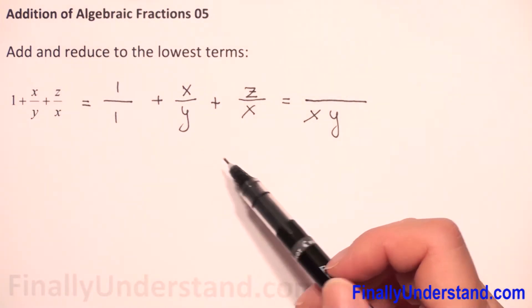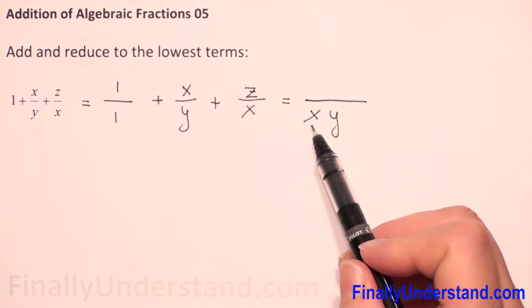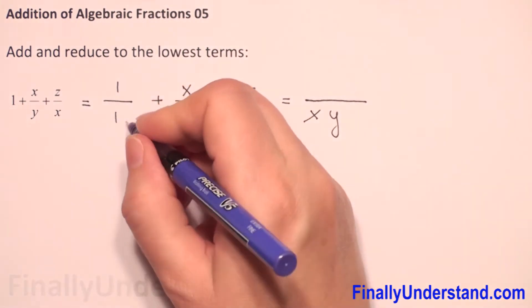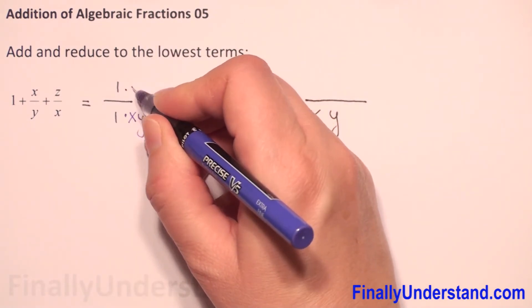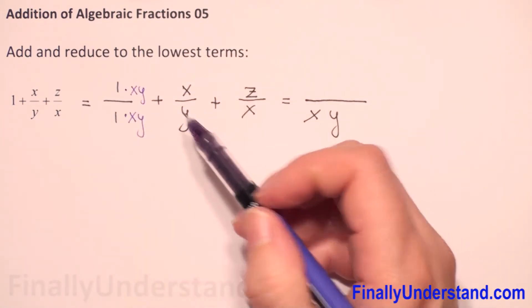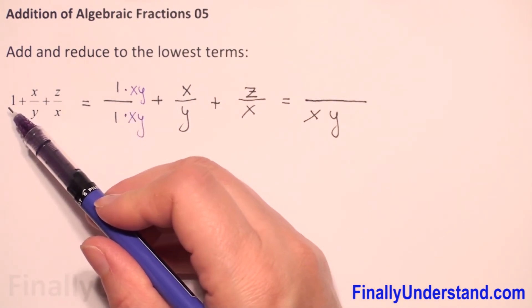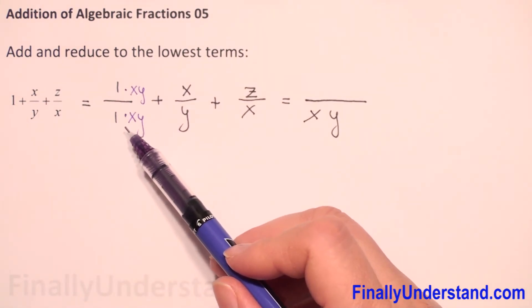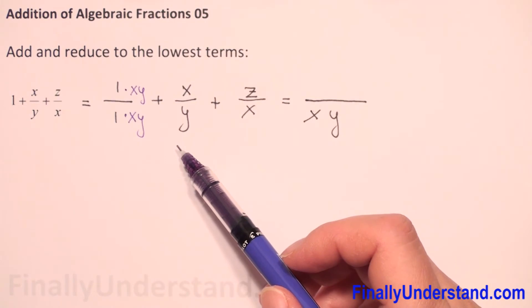When I change this fraction to the denominator xy, I have to multiply this fraction by xy. When I multiply the denominator by xy, I have to do the same with the numerator because I cannot change the expression. Since xy over xy equals 1, I still have the same value. I only change this denominator to xy because I need to add these algebraic fractions, and to add them I need the same denominator.